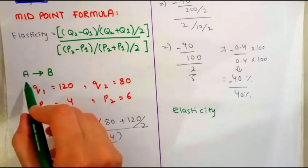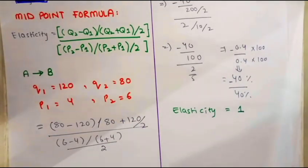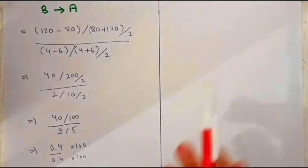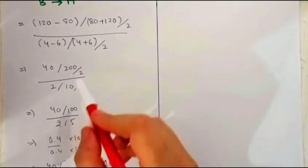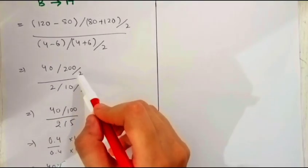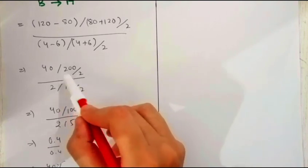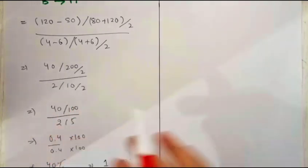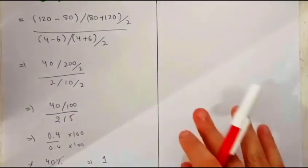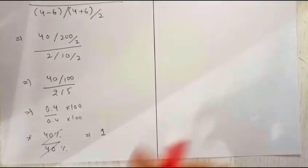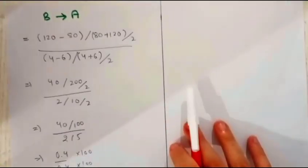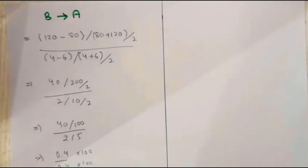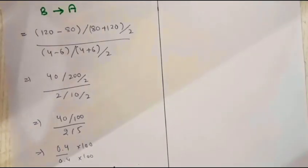When we further solve this, the elasticity from point A to B is 1. Now we find elasticity from point B to A using the same steps. When we perform all these calculations, the answer we get is also 1. This means elasticity from point B to A and A to B, in both cases the elasticity answer is 1.